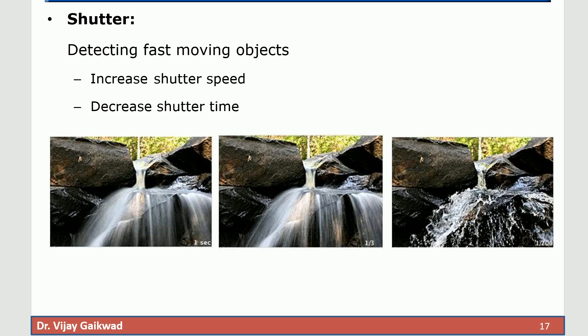Professional photographers use the speed of the shutter very intuitively so that they can click very nice photographs. Especially whenever you want to detect the fast moving objects, in order to capture every bit of information you need to carry out two things. Number one you increase the shutter speed and second you decrease the shutter time. If you increase the shutter speed and reduce the shutter time you can capture more and more details.